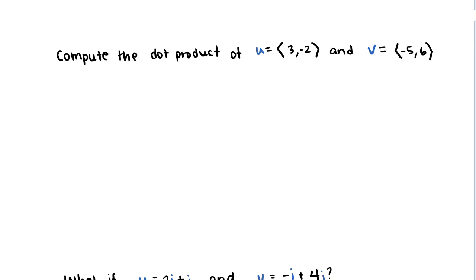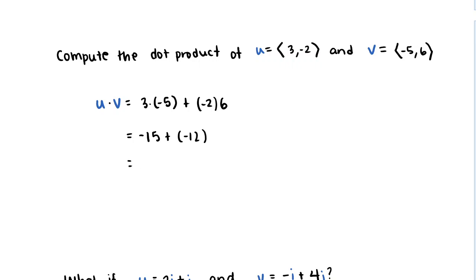Let's go ahead and compute the dot product of these two vectors u and v. All we do is take their horizontal components and multiply them together, and their vertical components and multiply them together, and sum the two quantities. So this is 3 times negative 5, added with negative 2 times 6. This comes out to be negative 15 plus negative 12. What we get out is negative 27. This is the value of u dot v.